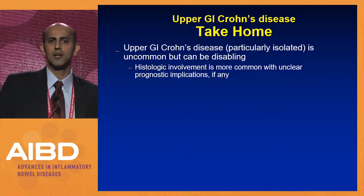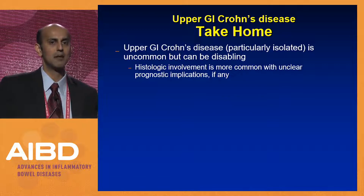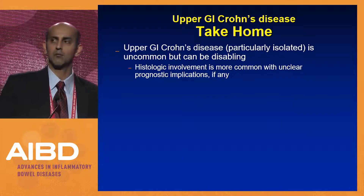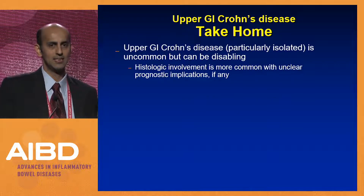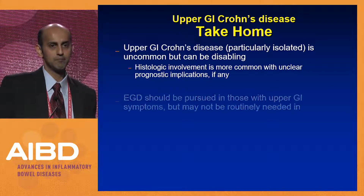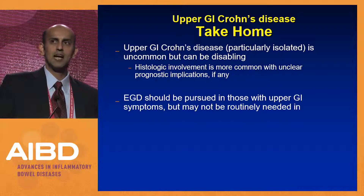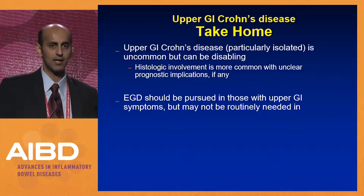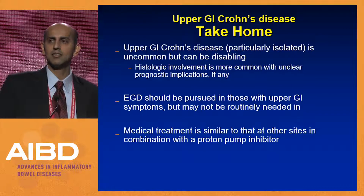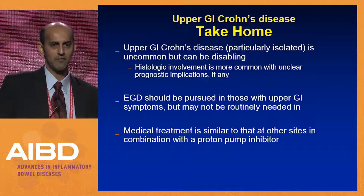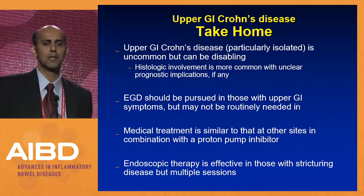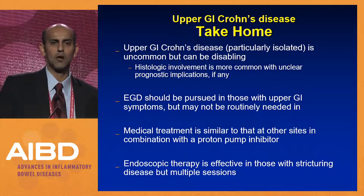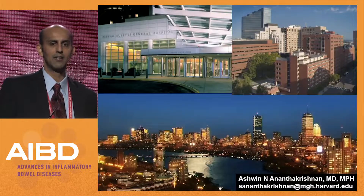Take-home messages: Upper GI Crohn's disease — particularly isolated — is uncommon, but because of the site and lack of easy surgical treatment, it can be disabling. Histologic involvement is frequently seen but may not necessarily represent active disease. Upper GI endoscopy does not need to be routine in all Crohn's patients, but should be considered in those with unexplained symptoms. Medical treatment is similar to other sites, often combined with a PPI. Endoscopic therapy is effective in stricturing disease, but multiple sessions are required — one-time dilation is not enough. Thank you for your attention.